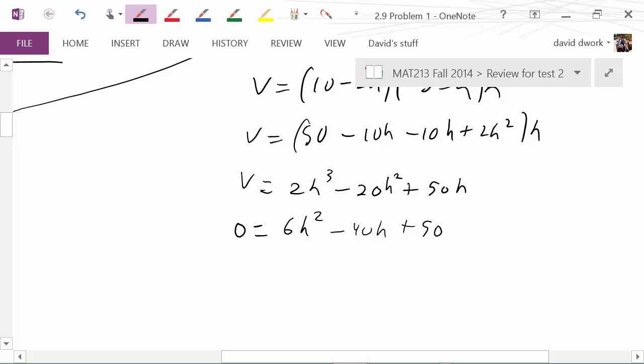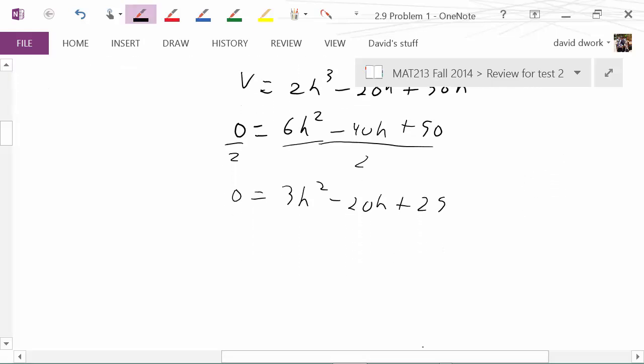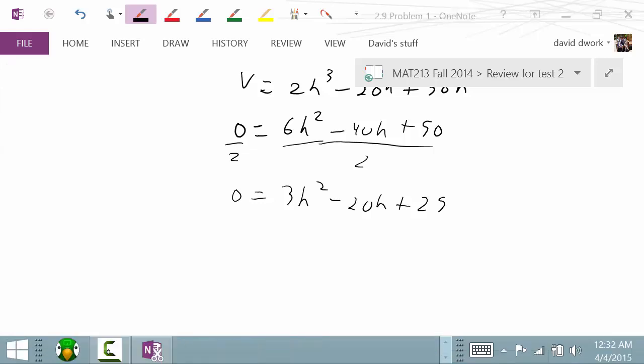Now we want to solve, and what might make our life a little easier is if we recognize a number that goes into everything. I see that 2 is a good starting place, so that's going to give us 3h² - 20h + 25. Let's hope that this thing factors.